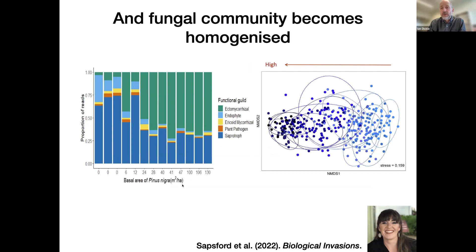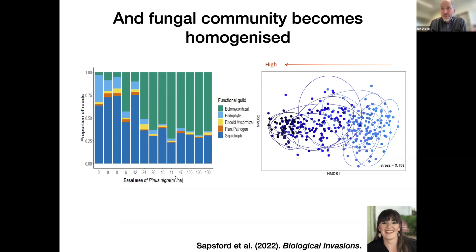We see this too in these figures: as pine basal area increases, the fungal community is increasingly dominated by a few species of ectomycorrhizal fungi on the left. On the right, we've done an ordination — light colors are open grassland sites, dark colors are pine-invaded sites — and you can see those communities are both shifting in space and also becoming more similar to each other; the spread of the points is becoming much smaller. This supports the idea that as invasives come in, they are homogenizing the community.